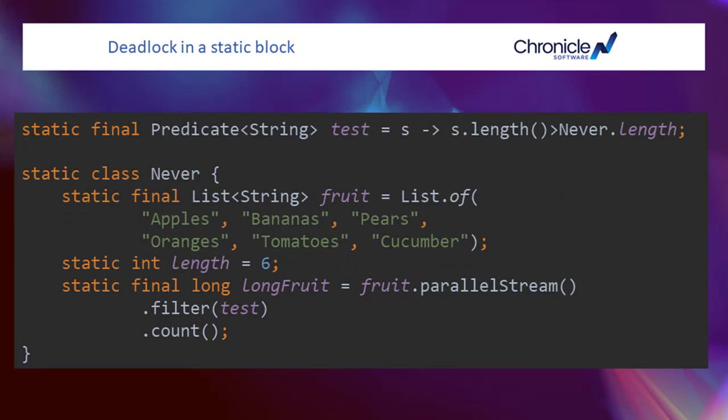If it had been a static final int, it wouldn't need to do this — the value would get inlined. But in this case, all of the background threads have to wait for the class to be initialized, but the class initialization itself has to wait for the parallel stream to complete, and thus we have a deadlock.